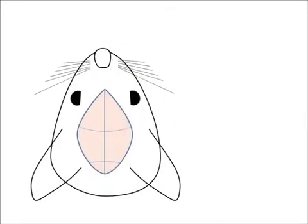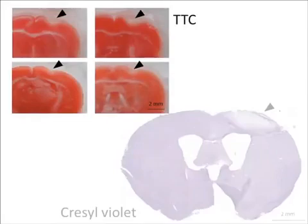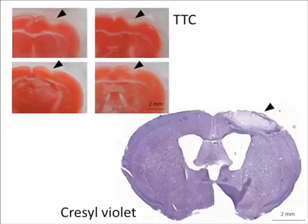At the end of the procedure, the skin is sutured to close the wound. The identification of ischemic areas can be quickly accomplished by TTC or cresyl violet staining.